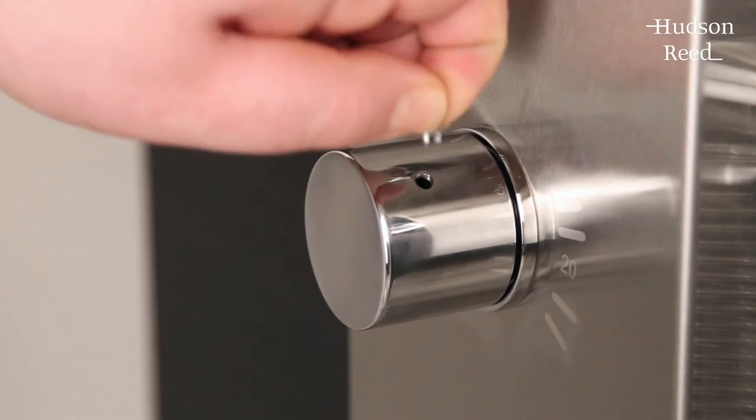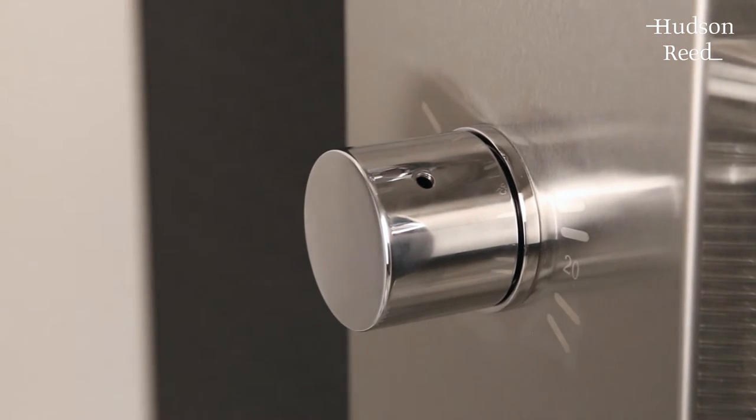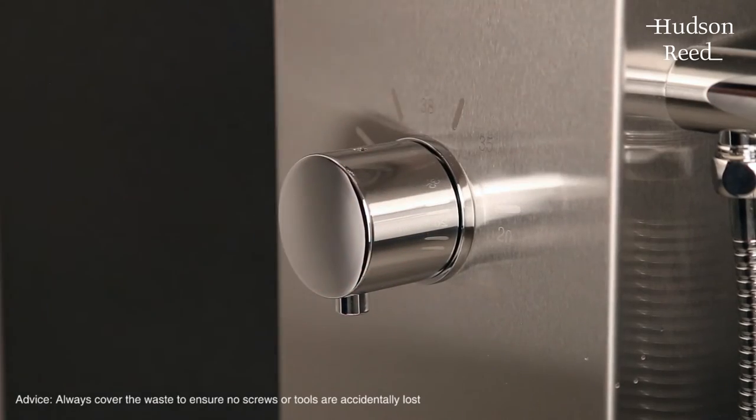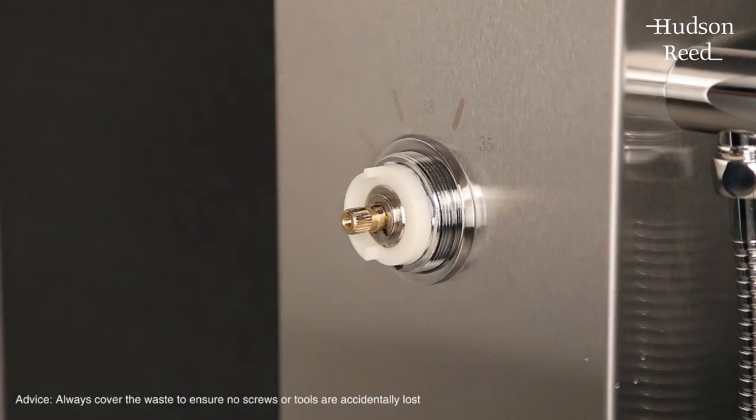Remove the plastic cap from the bottom of the temperature control handle to reveal a grub screw. Use the allen key provided with your shower to remove the grub screw and then remove the control handle.